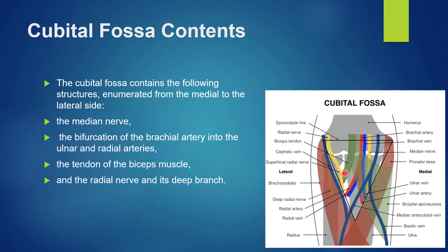Then there is the biceps tendon along with the bicipital aponeurosis. Most laterally there is the radial nerve and its deep branch. This is sometimes asked in MCQs — the most lateral content of the cubital fossa is the radial nerve and its deep branch.